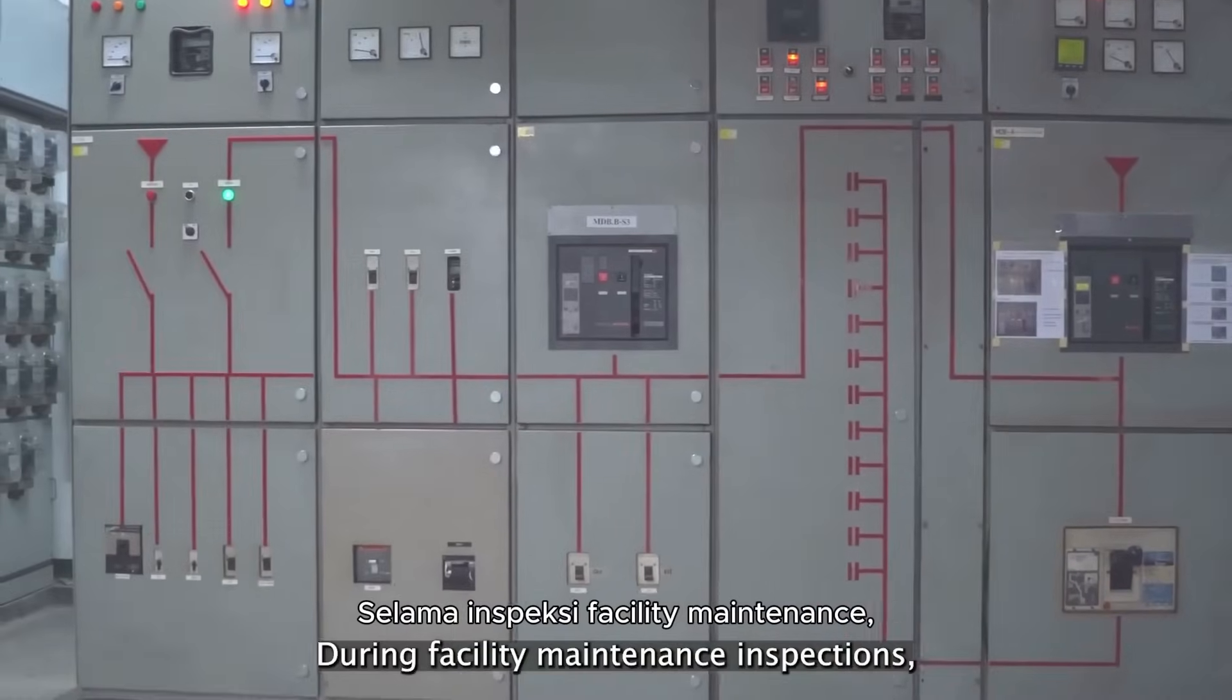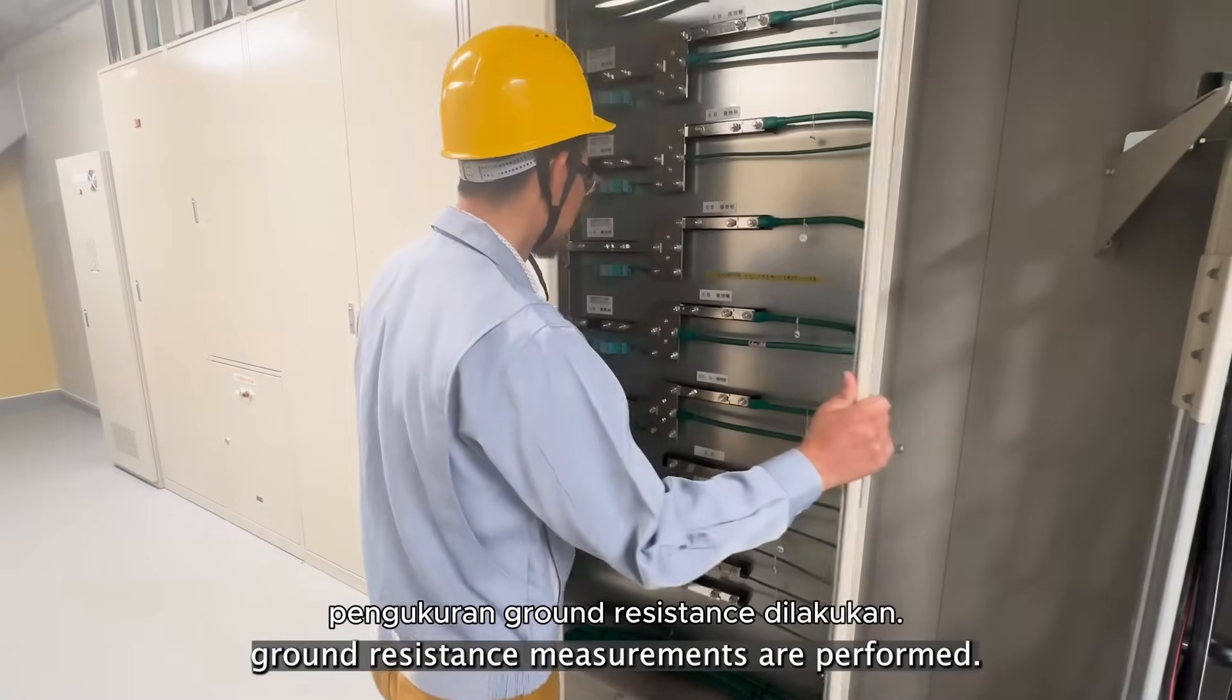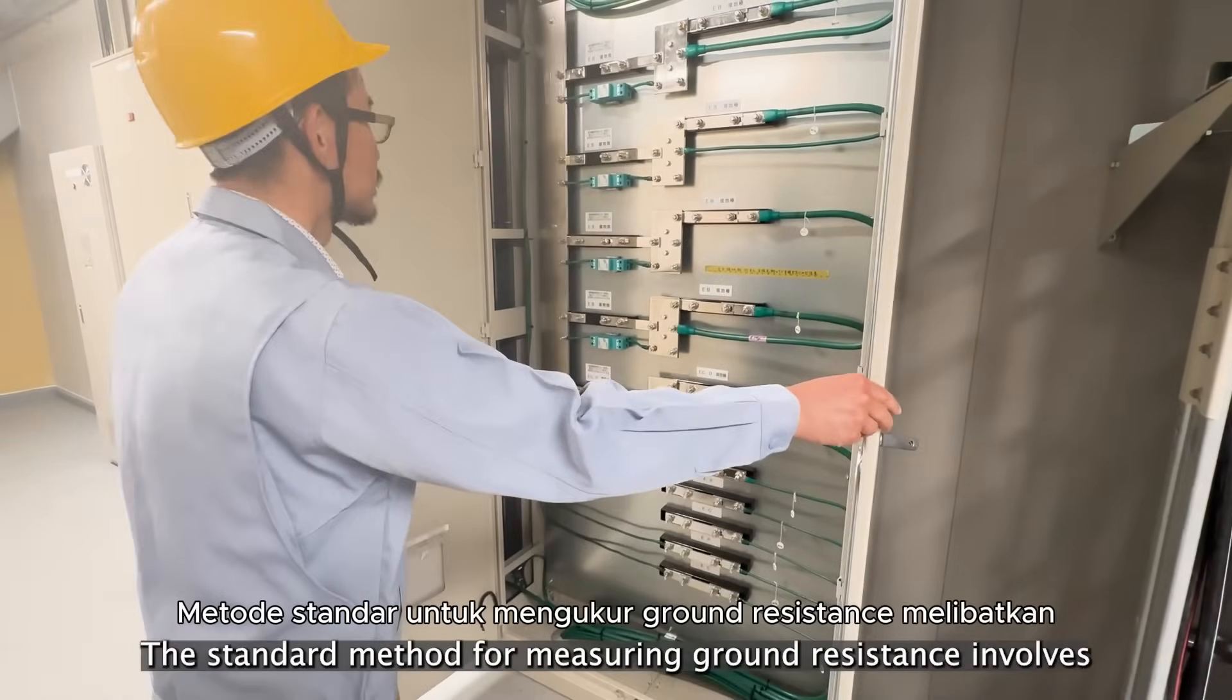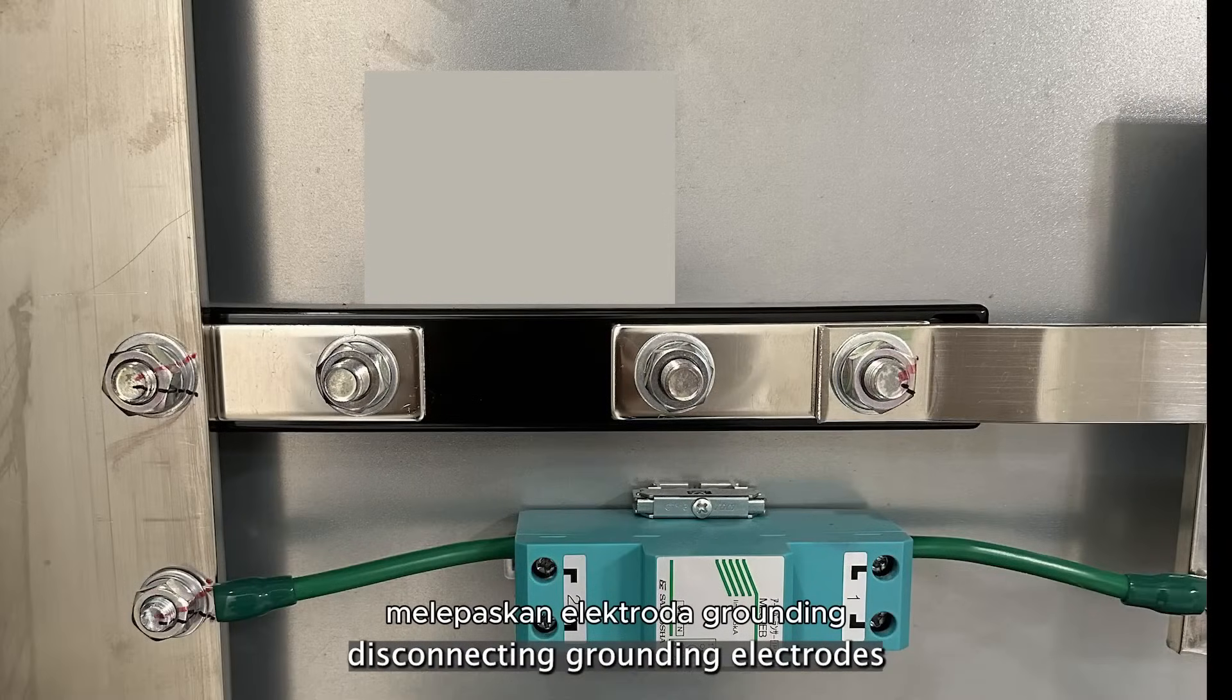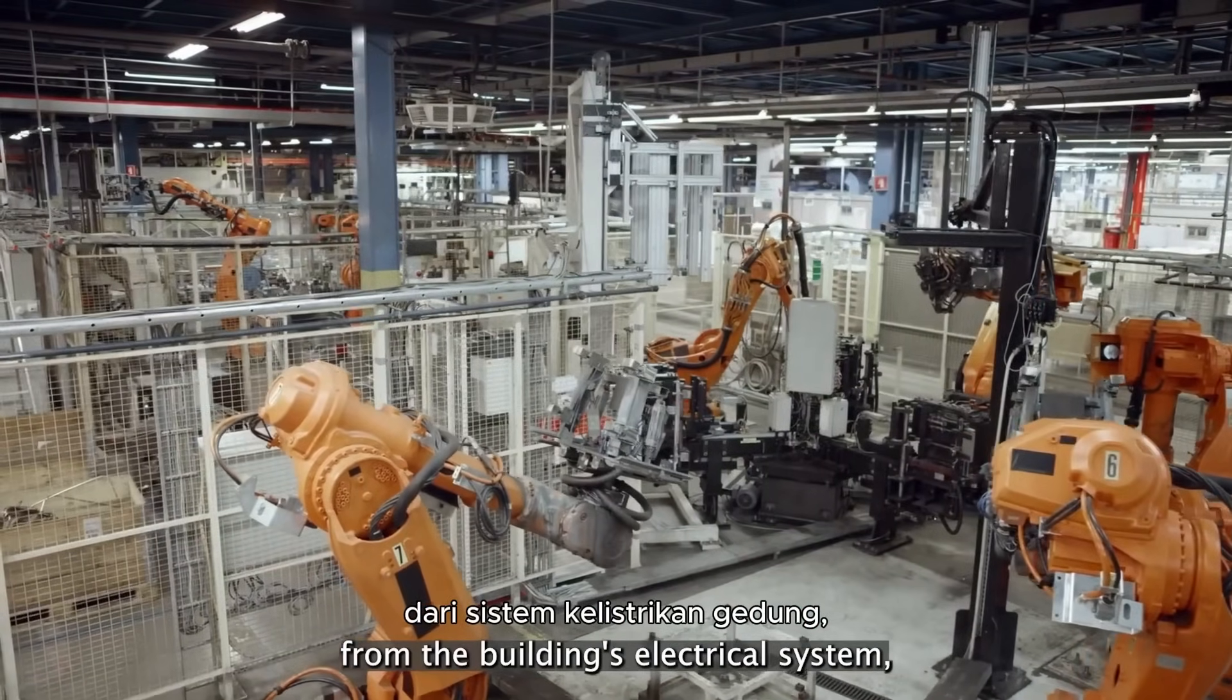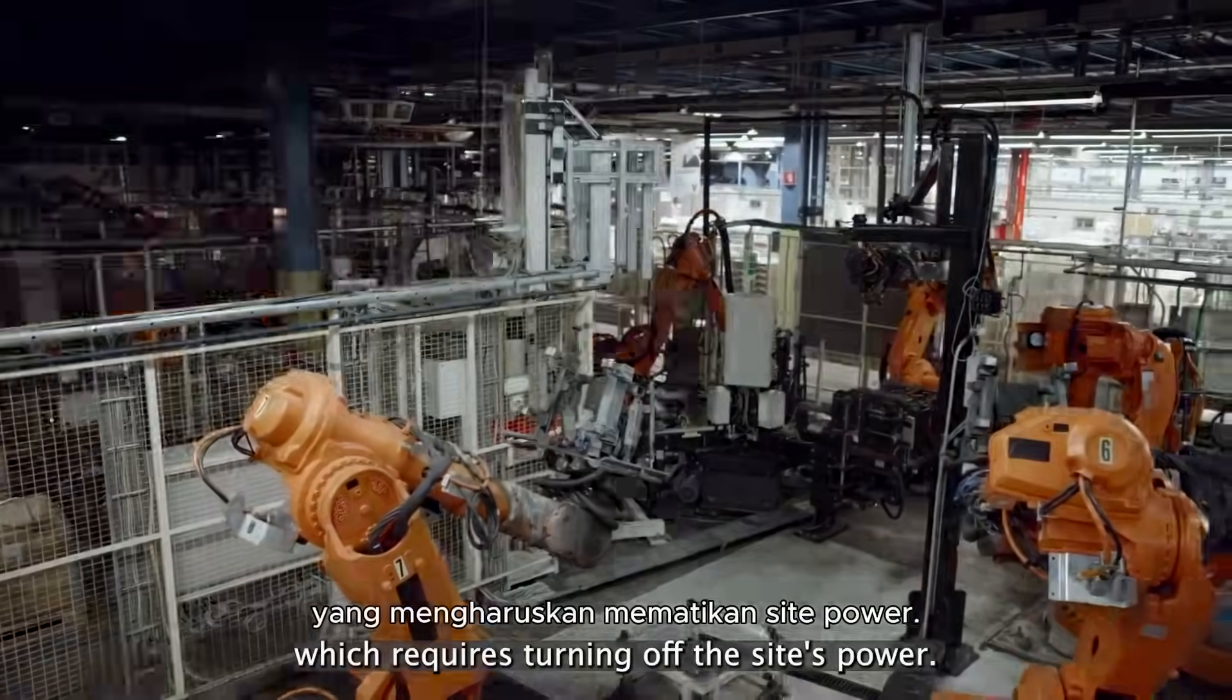During facility maintenance inspections, ground resistance measurements are performed. The standard method for measuring ground resistance involves disconnecting grounding electrodes from the building's electrical system, which requires turning off the site's power.